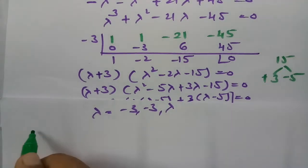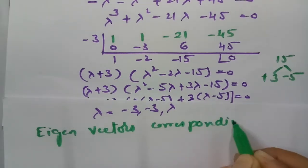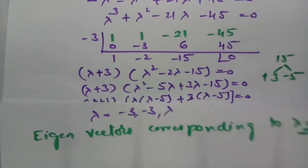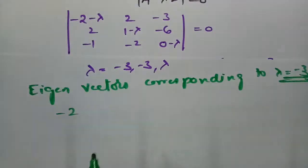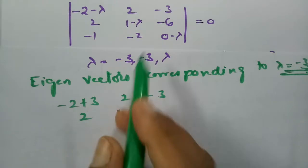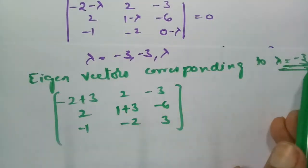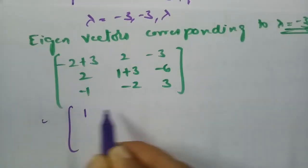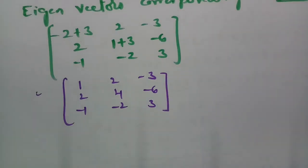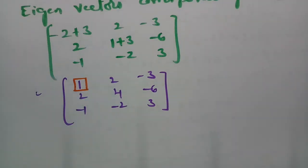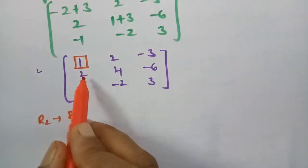Now finding the eigenvectors corresponding to λ = −3. Substituting λ = −3 into (A − λI) gives the matrix: row 1: 1, 2, −3; row 2: 2, 4, −6; row 3: −1, −2, 3. I will find the rank using row reduction, making the elements below the first diagonal entry zero.